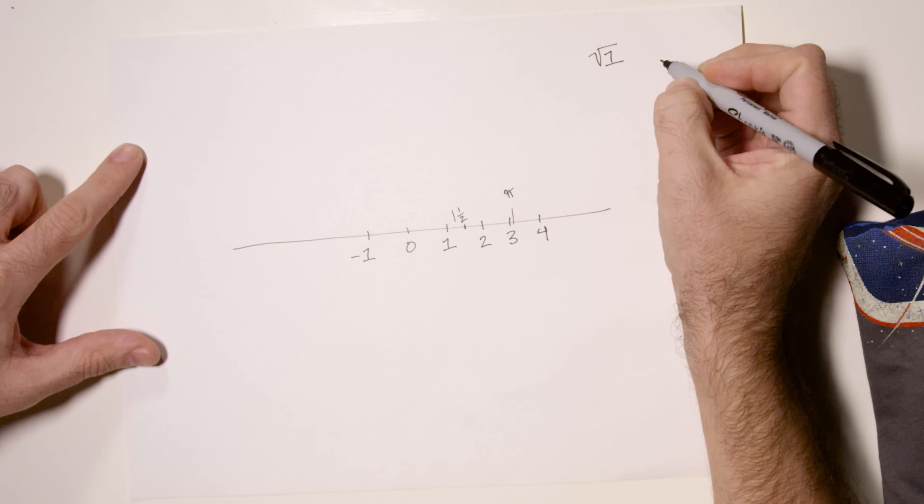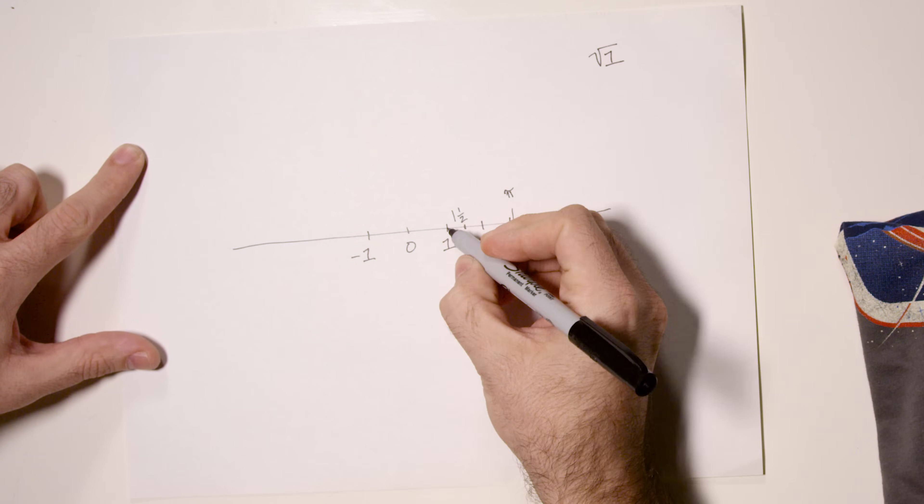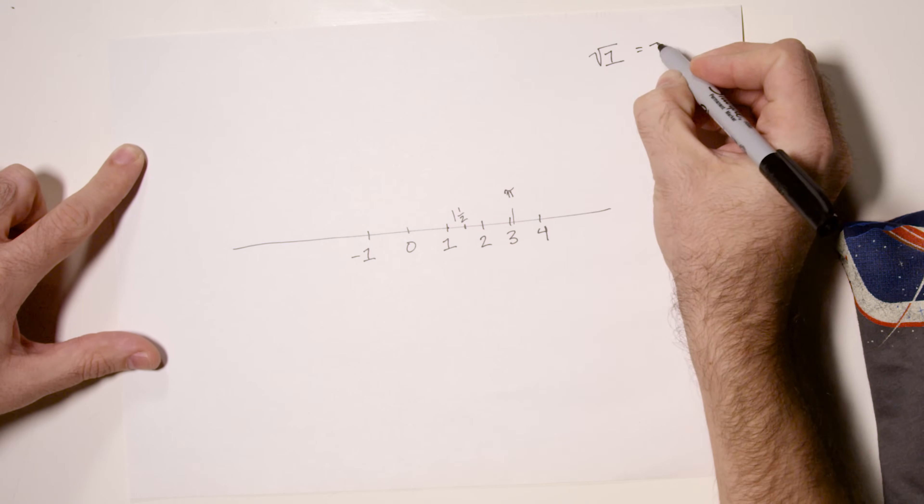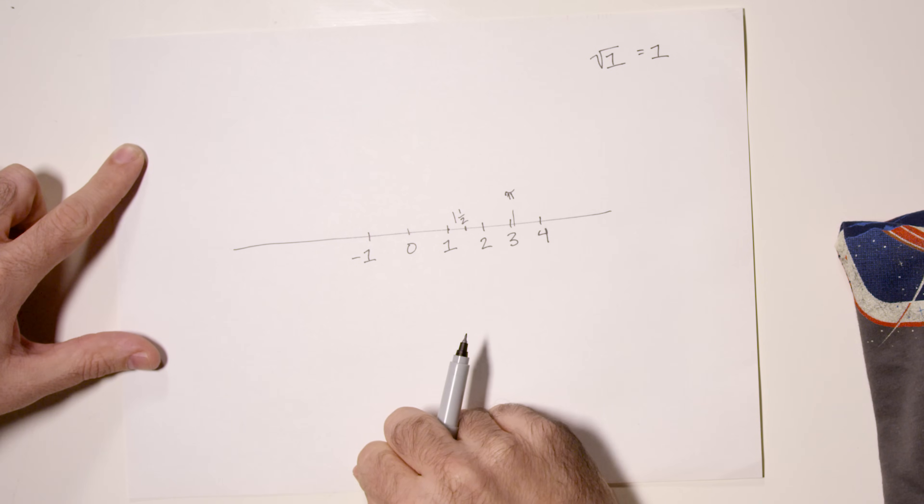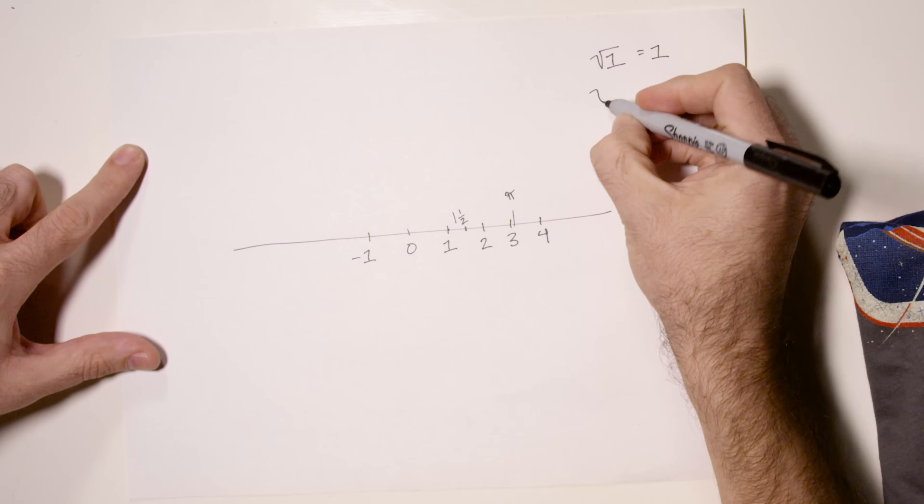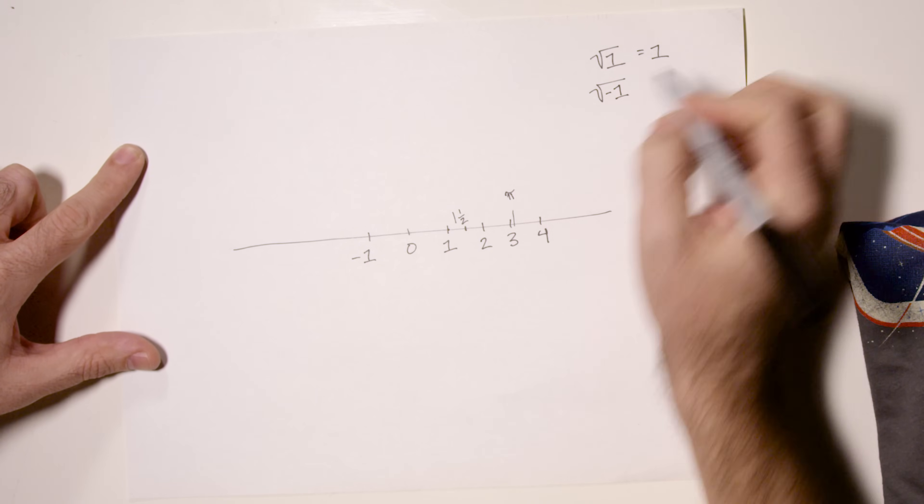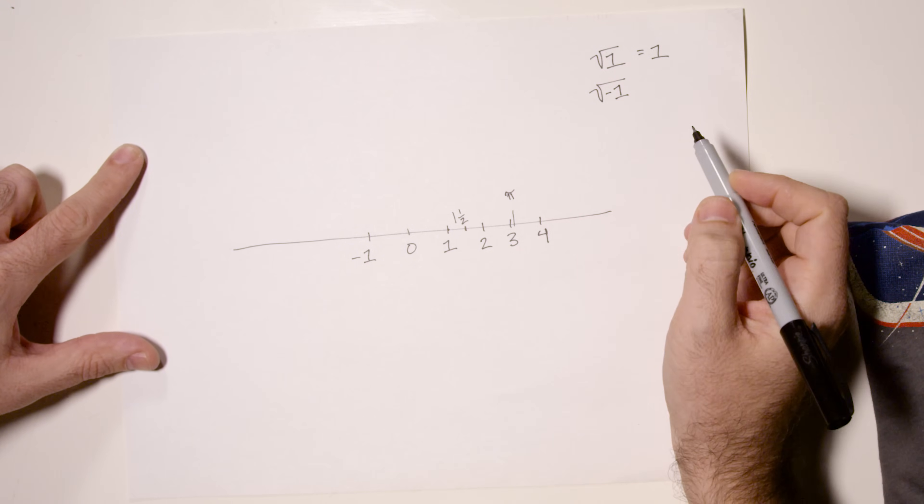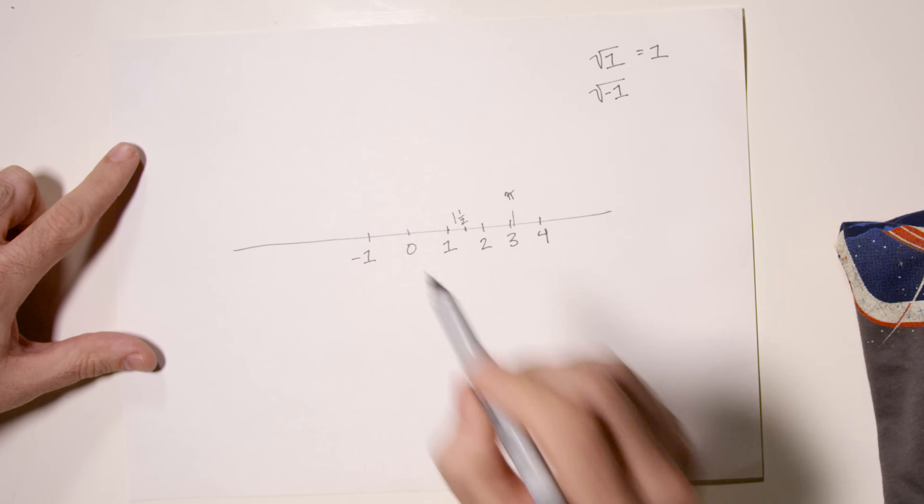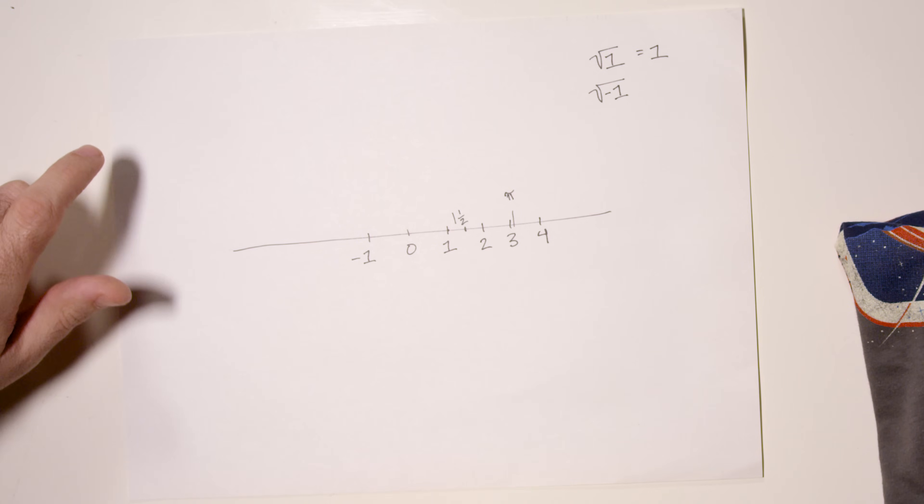The square root of 1. It's a real number. It's on here. It's just 1. 1 times 1 is 1. But what isn't here, well, is a lot of stuff. For example, where is the square root of negative 1? Where on this real number line is that number? Well here's the problem. Any real number times itself is positive. Negative 1 times negative 1 is just 1. Negative 2 times negative 2 is 4.